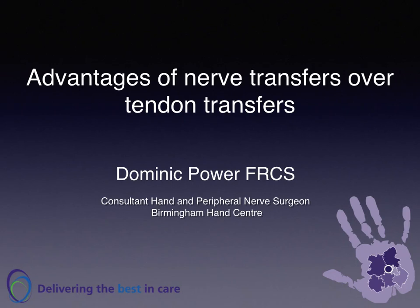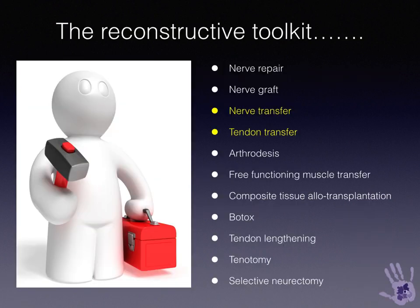This short talk is about the advantages of nerve transfer surgery over tendon transfer surgery for restoration of function after neurological deficit. The reconstructive toolkit for a hand and peripheral nerve surgeon involves many different techniques, but here we're going to concentrate on nerve and tendon transfer reconstruction.